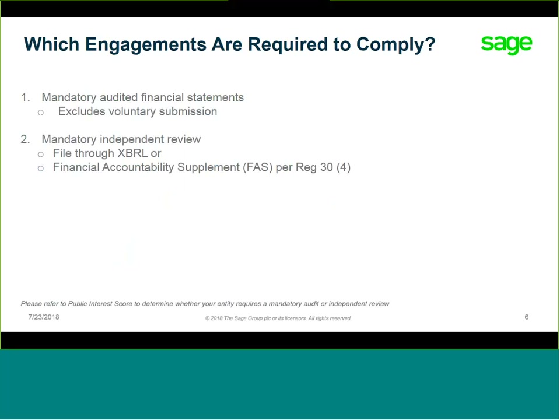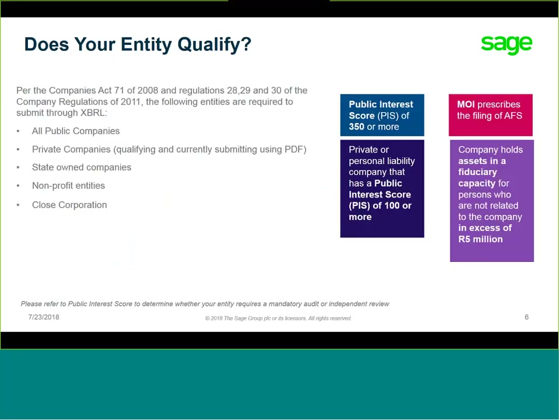What type of entities are audited or reviewed per the Companies Act? Public, private, state-owned, CCs, and non-profits are qualifying entities. Please note that cooperatives, trusts, and entities not required to be audited or independently reviewed are excluded.